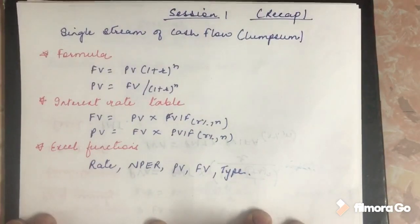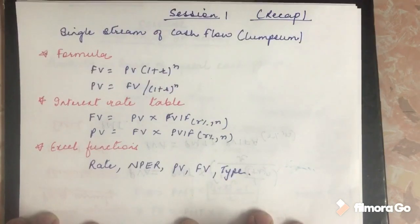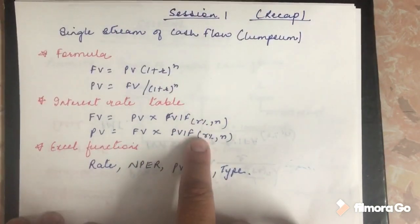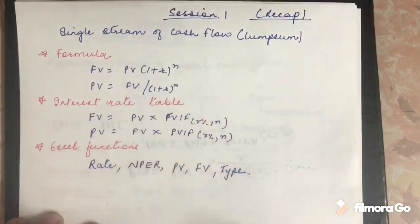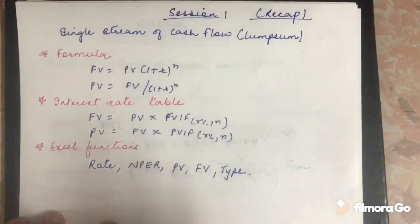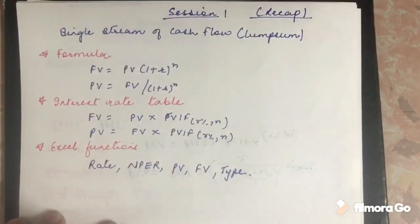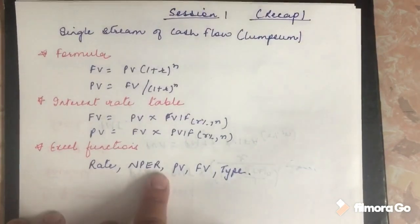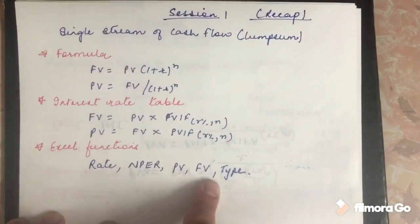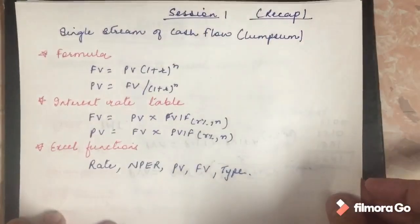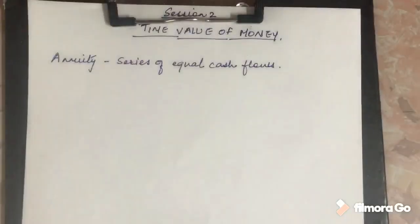In the interest rate table technique, we have seen two tables: the future value interest factor and the present value interest factor. Using these two tables we can also calculate and convert the value of money across different time frames. Another technique was the Excel spreadsheet function, where I told you about the different inputs: rate, NPER (time period), present value or future value, and the type which is 0 or 1. We will do some more clarification on this in session 2.